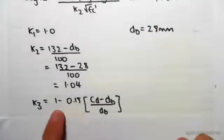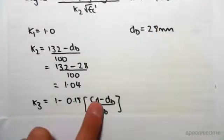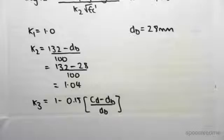k3 is this formula over here: 1 minus 0.15 times Cd minus db on db.